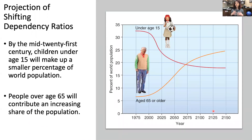We can project demographic shifts using these age pyramid data. By the mid-21st century, children under 15 will make up a smaller percentage of the world's population than those who are 65 or older. A graph with year on the x-axis from 1975 through 2150 and percent of world population on the y-axis clearly shows those under 18 rapidly declining as a percentage, while those 65 or older steadily increase.